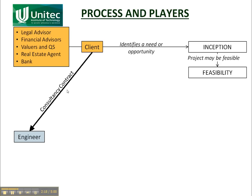The feasibility study is usually done by the engineer, and a consultancy contract is usually established. A contract means that there is a binding relationship — they both have responsibilities to each other, and if one of them reneges on those responsibilities, the other one can sue them. For the feasibility study, the engineer might not have in-house expertise in geotech, so he might go to another consultancy and ask them to do the geotech. That's what a sub-consultant is. It might be the same with surveying.